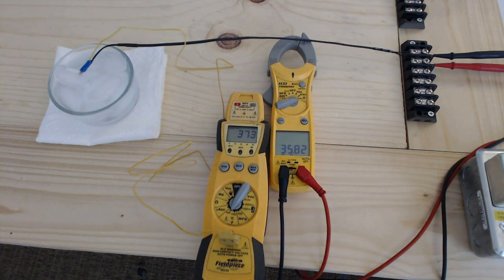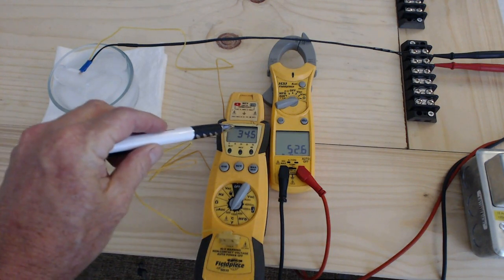You can see the temperature is dropping, and because it's a negative temperature coefficient thermistor, as the temperature drops, the resistance increases. Here's the temperature dropping to 34 degrees.